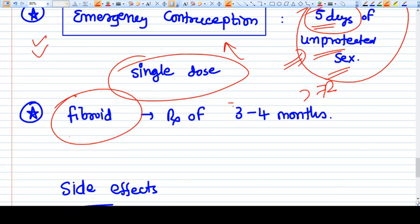For using it for fibroids, we have to give this drug for a longer time, that is three to four months.